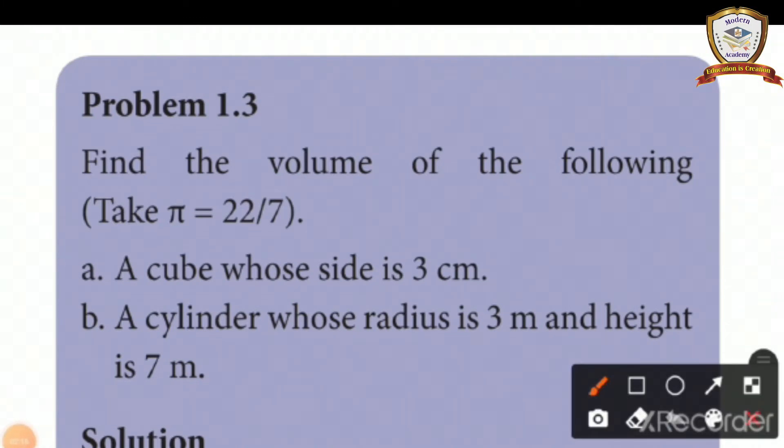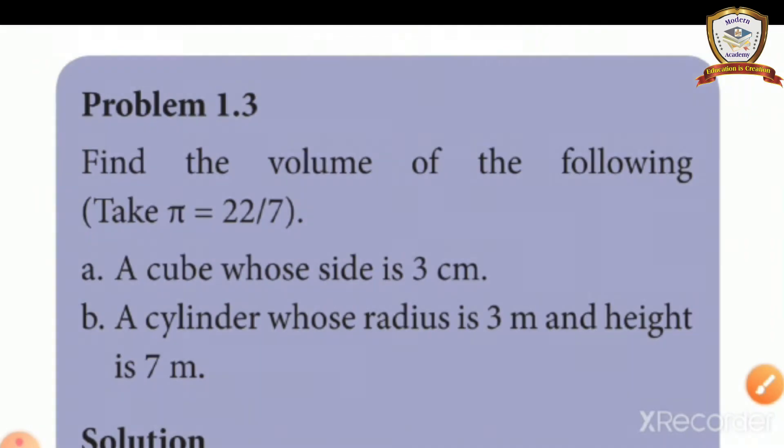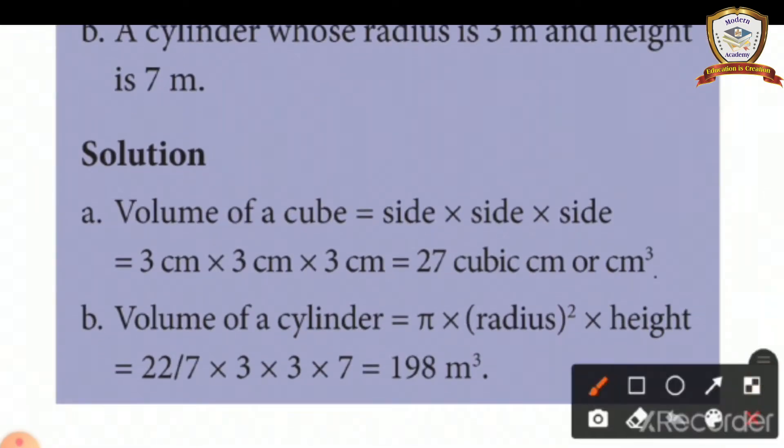Problem 1.3: Find the volume of the following. Take π = 22/7. First, a cube whose side is 3 centimeters. Second, a cylinder with radius 3 meters and height 7 meters. Solution: Volume of cube equals side × side × side, so 3 × 3 × 3 = 27 cubic centimeters or cm³.